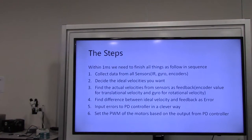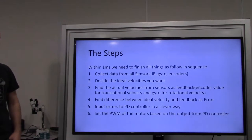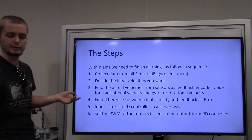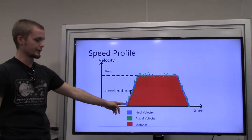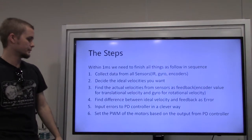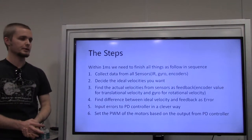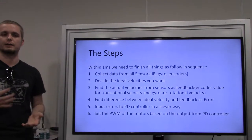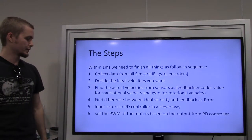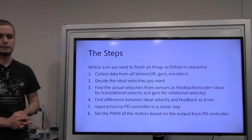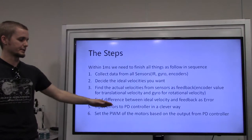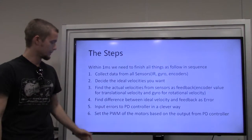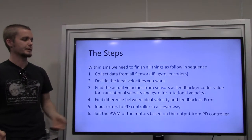Find the difference between the ideal velocity and the feedback — that's our error. The error is the difference between the blue line and the green line. Then input the errors to the PD controller, which makes control more effective than just P alone. We use I in a different way — essentially doing a positional PD controller, and also using I for the sensors. Finally, set the PWM of the motors based on the PD controller output. You do this for both translational and rotational movement.